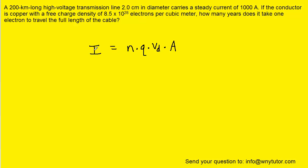I represents the current that's flowing through this transmission line stated in the question. N is the number of mobile charge carriers, and the question actually gives us that directly: 8.5 times 10 to the 28th electrons per cubic meter. That is going to be our n value.